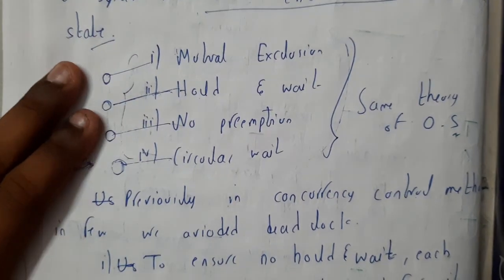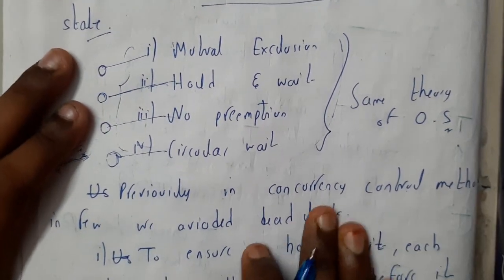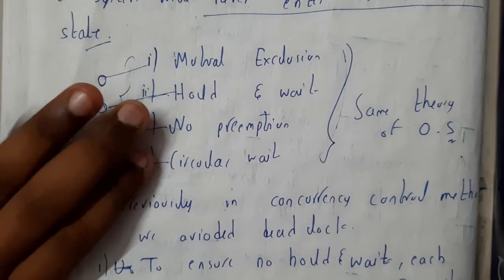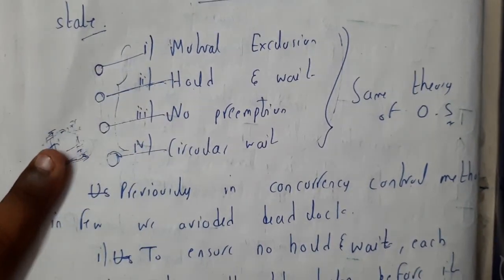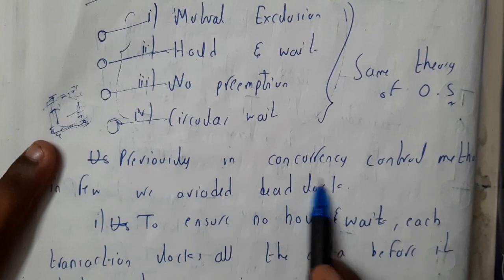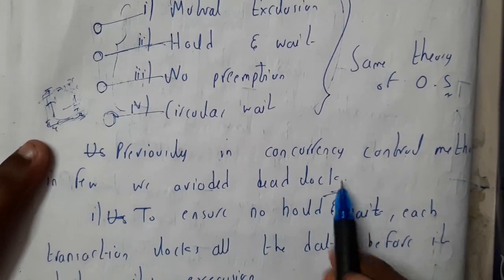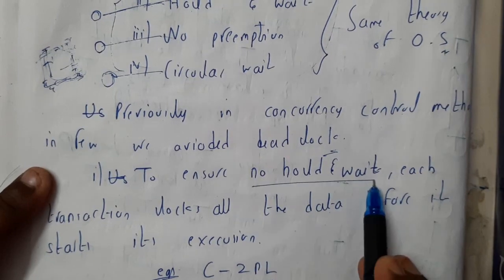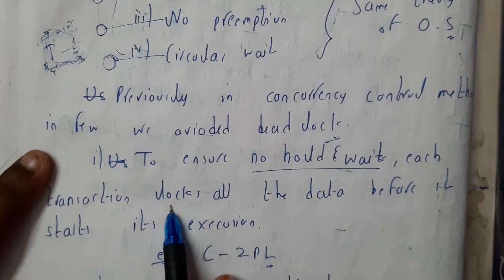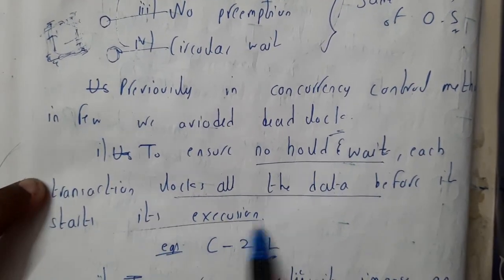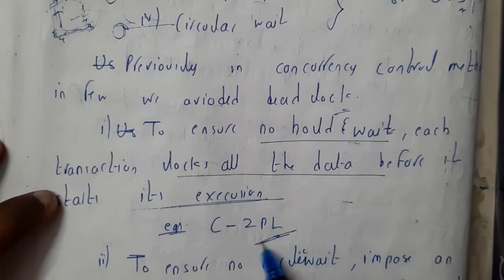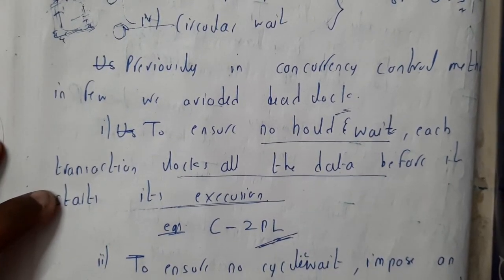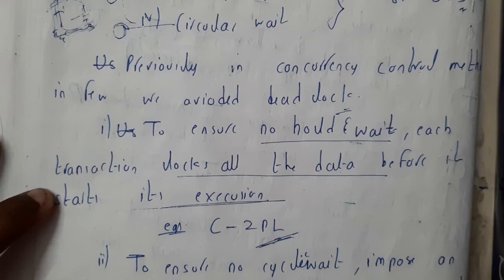Knowingly or unknowingly, we already broke few of these by using concurrency control algorithms. Previously in concurrency control algorithms, few avoided deadlock. To ensure no hold or wait, each transaction locks all the data before the transaction executes. We already saw this in 2PL.